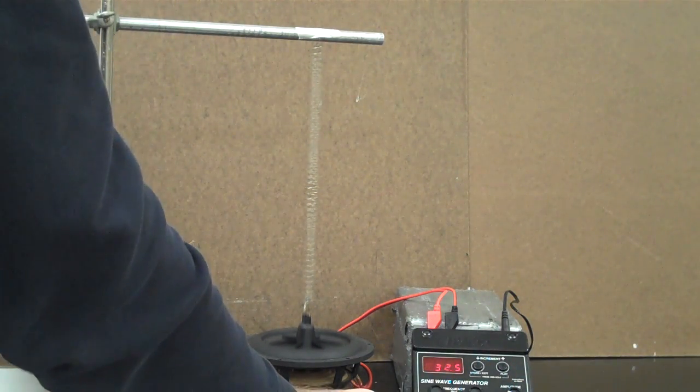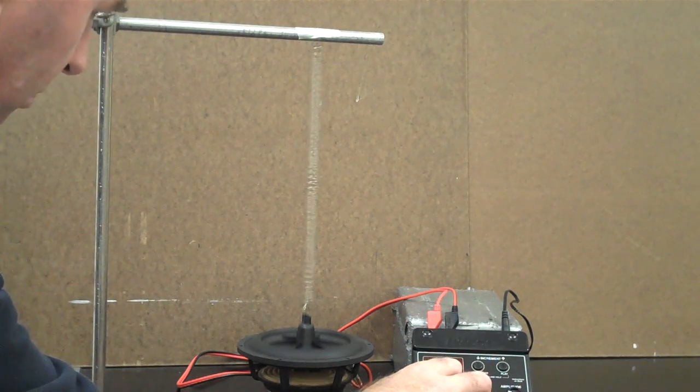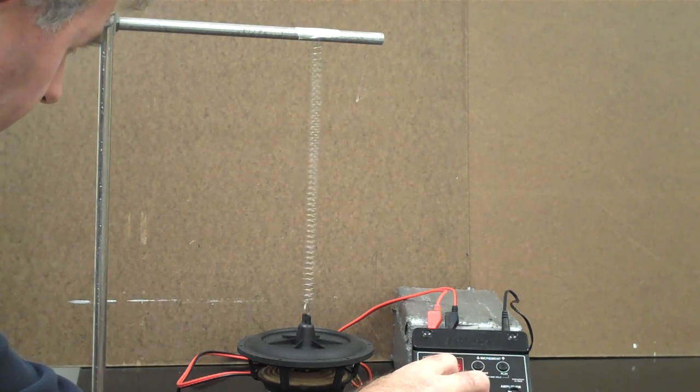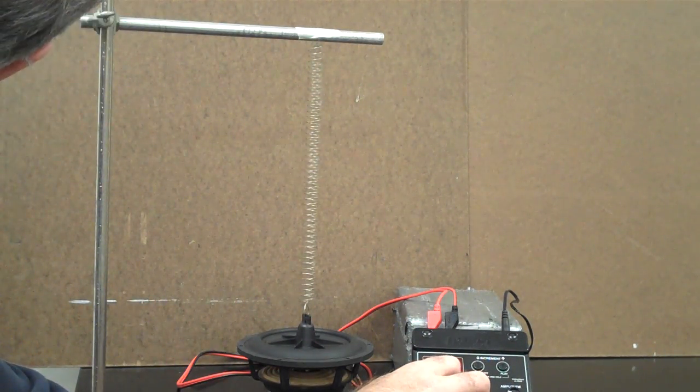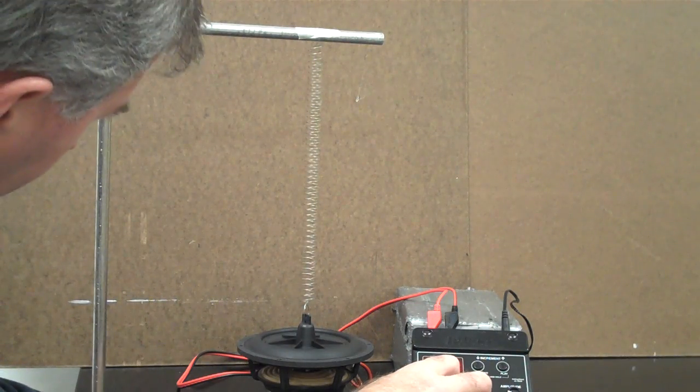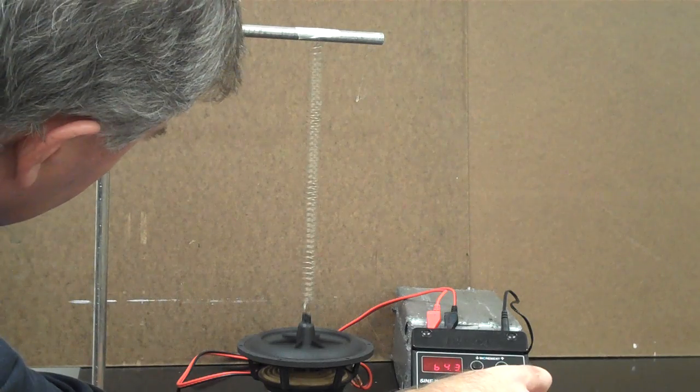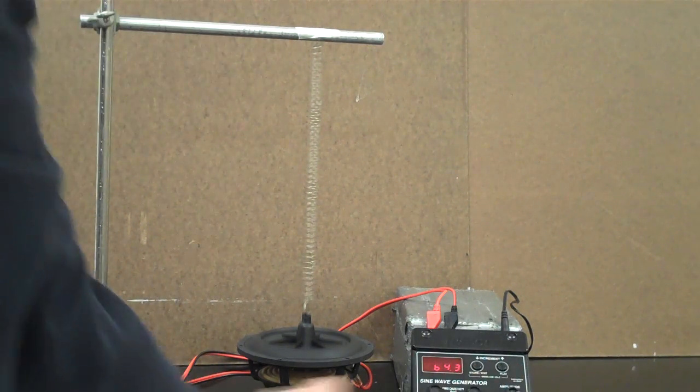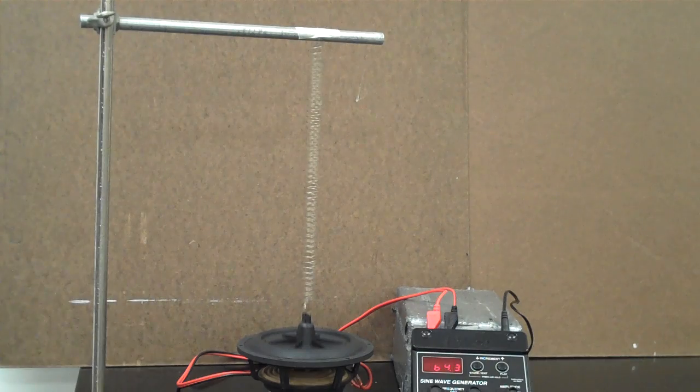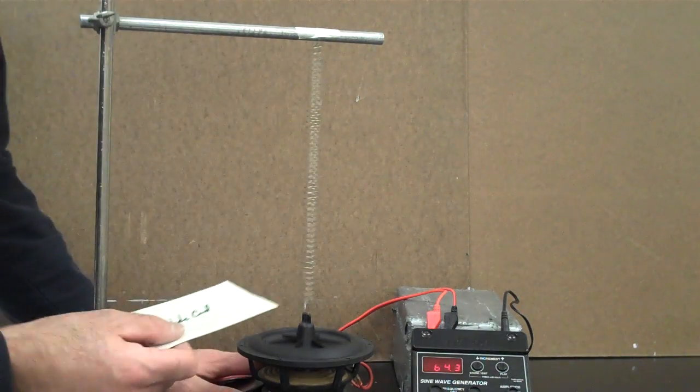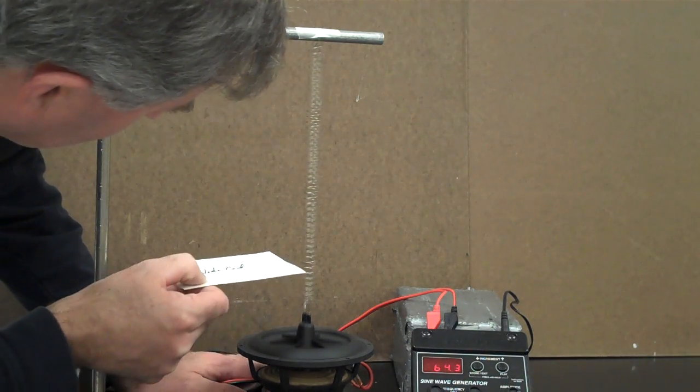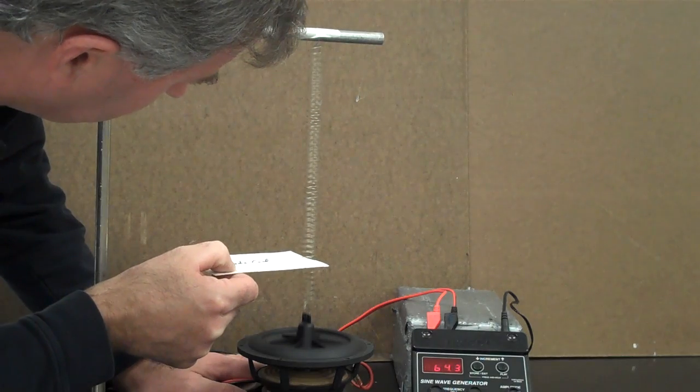Now I'm going to increase the frequency again and I'm going to get it up to, let's try right about there, which is 64.5, 64.3 hertz. So I've nearly doubled the frequency to 64.3 hertz. And what I'm going to see now is I get twice as many nodes.